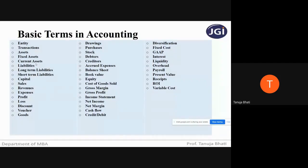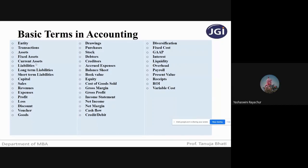Next, current assets. A current asset is again an asset of a company but which is expected to be sold or consumed within a period of one year. Students, where does current asset fall in which financial statement? It is shown in the balance sheet, on the asset side, under current assets.